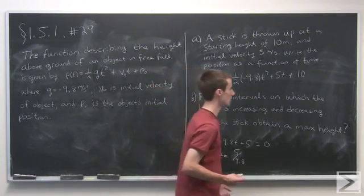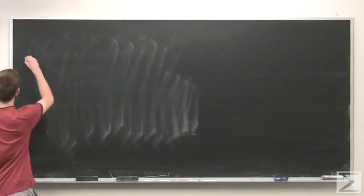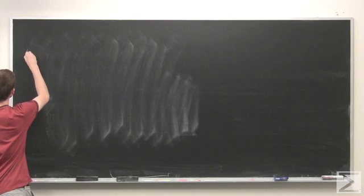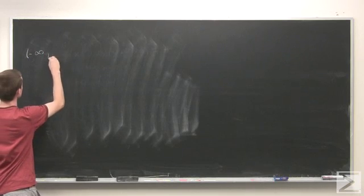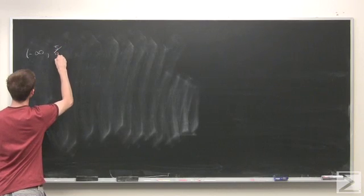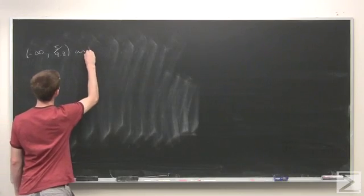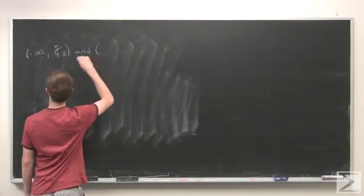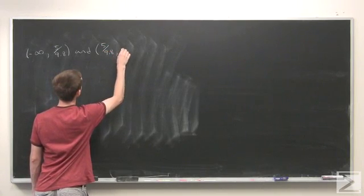So we have one critical point, that means we need to check the sign of the derivative on two different intervals. First we need to look at minus infinity to 5 over 9.8, and 5 over 9.8 to infinity.